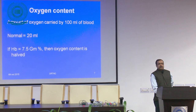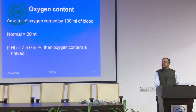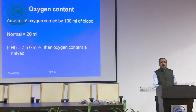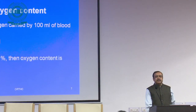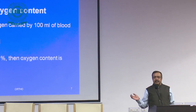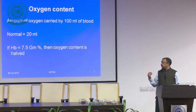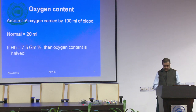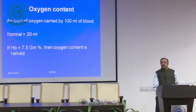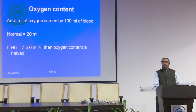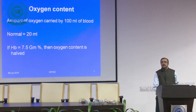With 5 liters of blood in our body, we have approximately 1000 ml of oxygen available, and 250 ml is used every minute. That gives us a reserve of 750 ml, meaning a patient can survive for two to three minutes — the 'golden three minutes.' However, if the patient's hemoglobin is already 7.5 g/dl, this reserve would be reduced by 50%, putting anemic patients at much higher risk.